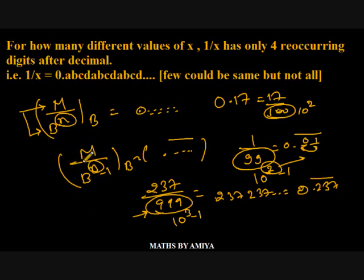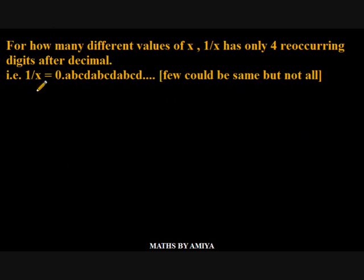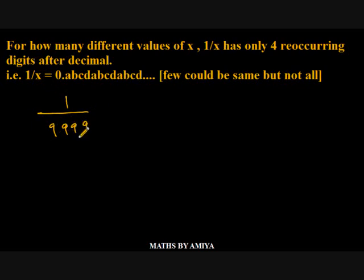I hope the concept of decimal and reoccurring is clear. Now let's solve the question. In this question we want 4-digit reoccurring, which means 1 upon x, where x could be 9999 or could be a factor of 9999.